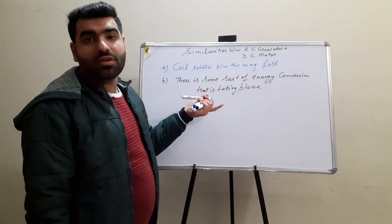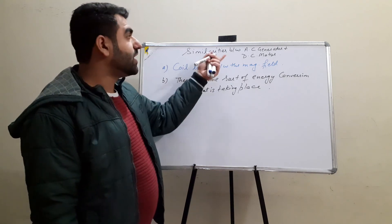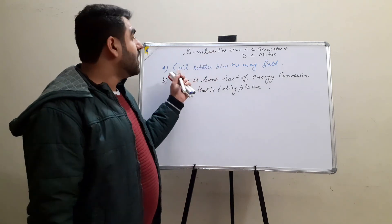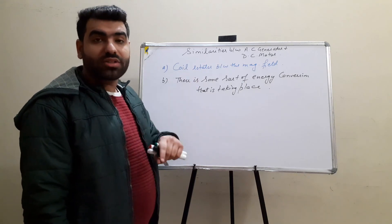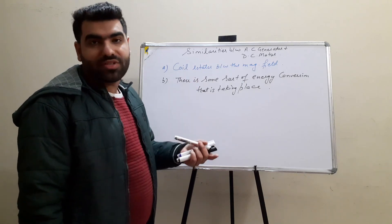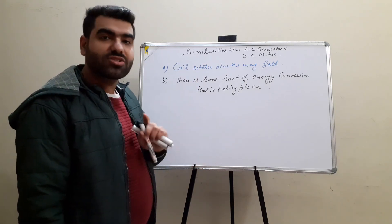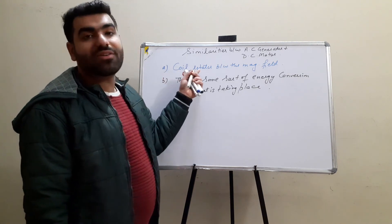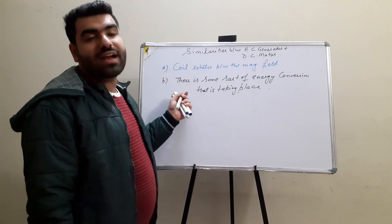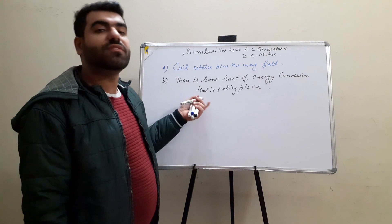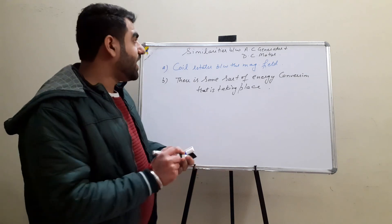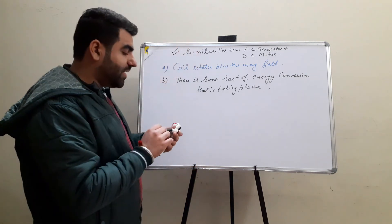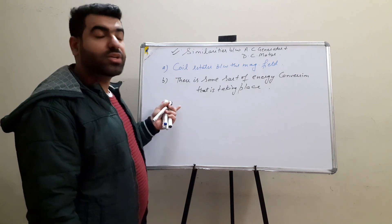In the case of an AC generator, energy conversion is from mechanical to electrical, and in a DC motor it is electrical to mechanical — but still there is energy conversion taking place in both. Whether it is input rotation or output rotation, in both cases the coil rotates between the magnetic field. So these are the two similarities between AC generator and DC motor.